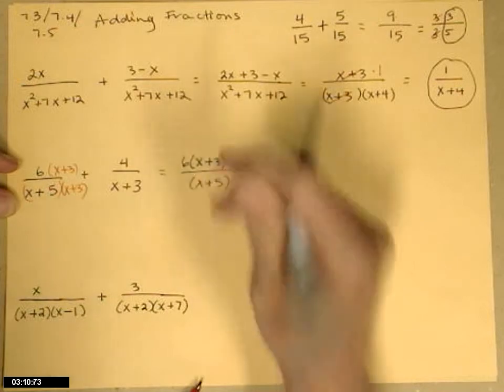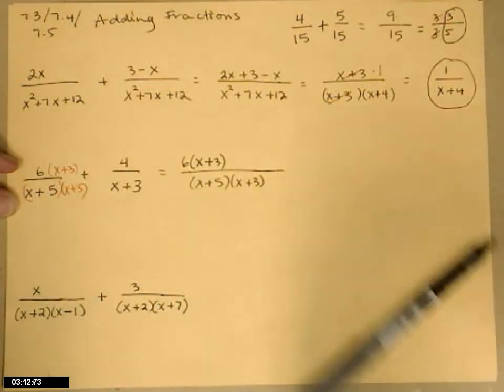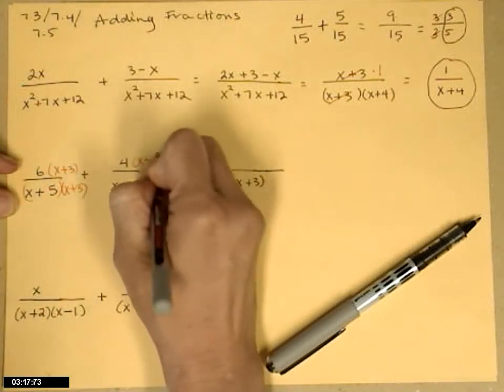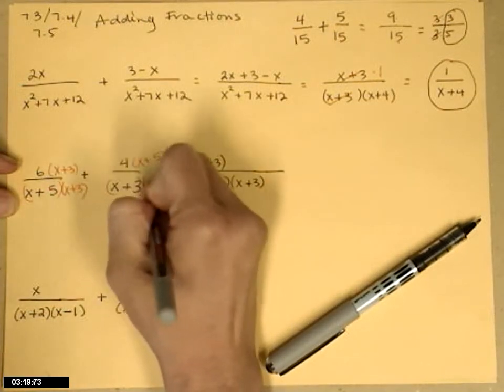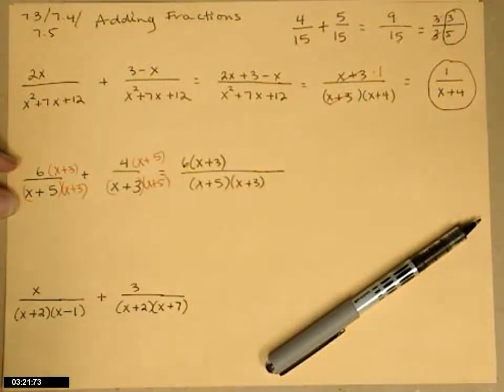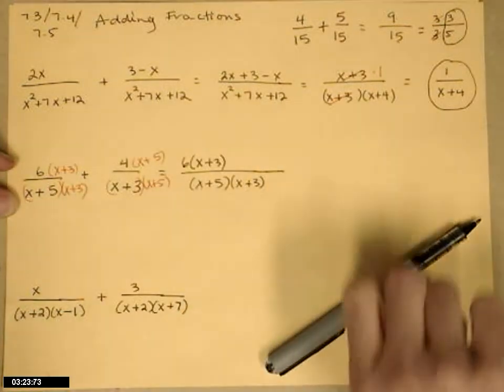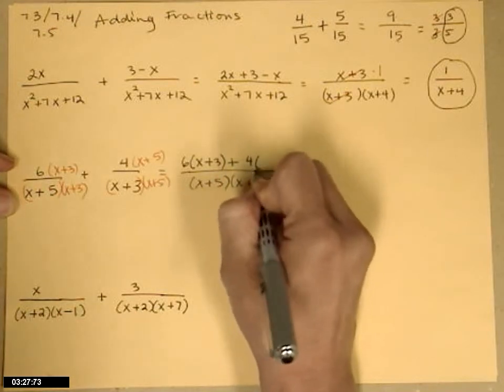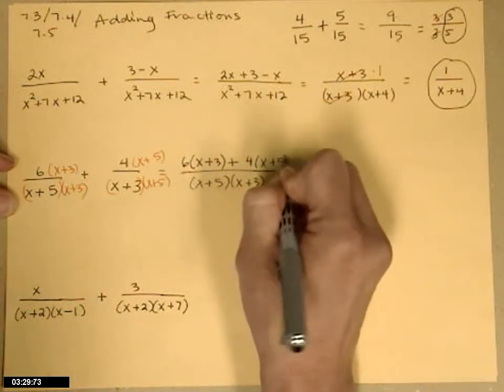I'm going to look at this second fraction. It has the x plus 3. It's missing the x plus 5, so I would multiply top and bottom by x plus 5. So the other part of my numerator is going to be plus 4 times x plus 5.